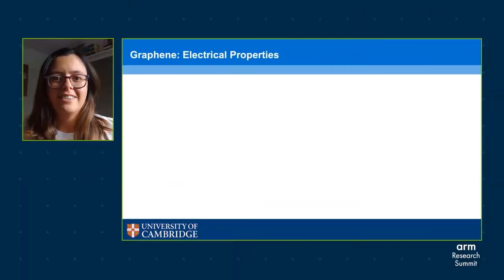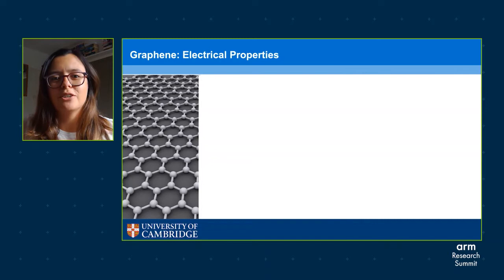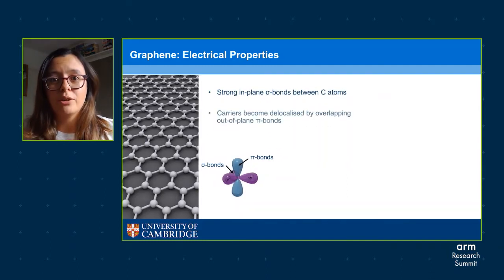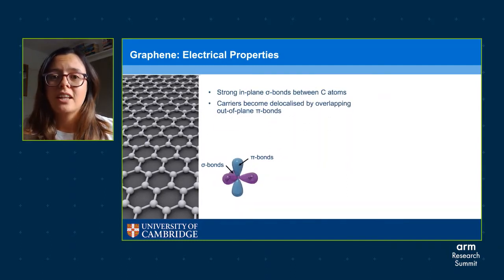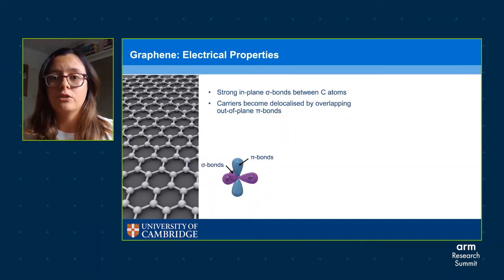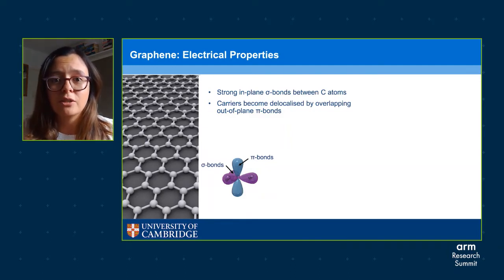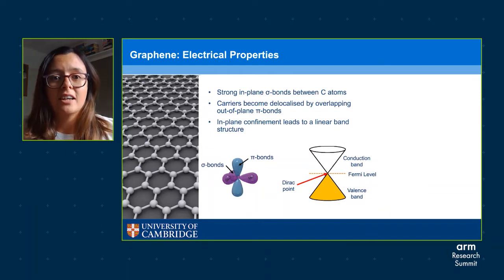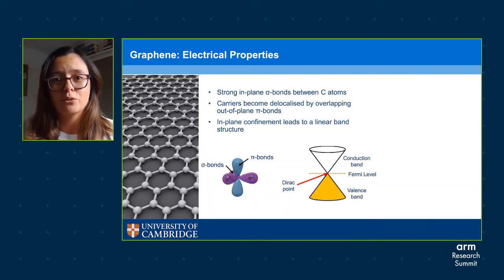Graphene is a single sheet of carbon atoms arranged in a honeycomb structure, confined in the 2D plane. Each carbon atom is covalently bonded to three neighboring carbon atoms, forming very strong sigma bonds that give graphene its high mechanical strength. Graphene's conductivity comes from the out-of-plane pi bond that overlaps with neighboring carbon atoms, so the electrons become delocalized and behave as a 2D electron gas. The in-plane confinement leads to a linear band structure, and unlike silicon, graphene does not have a band gap — instead the valence band and conduction band touch at the so-called Dirac point. In undoped graphene the filled energy states are shown in yellow and the Fermi level is at the Dirac point.